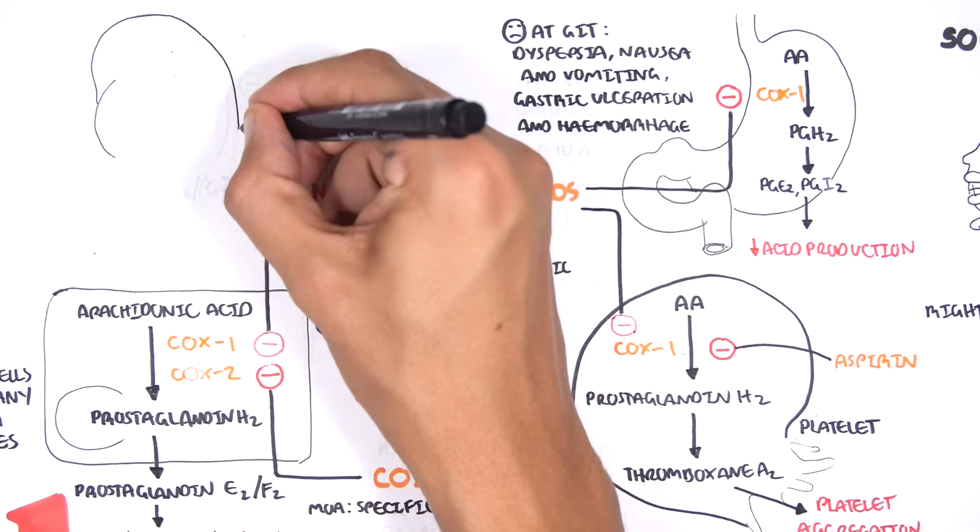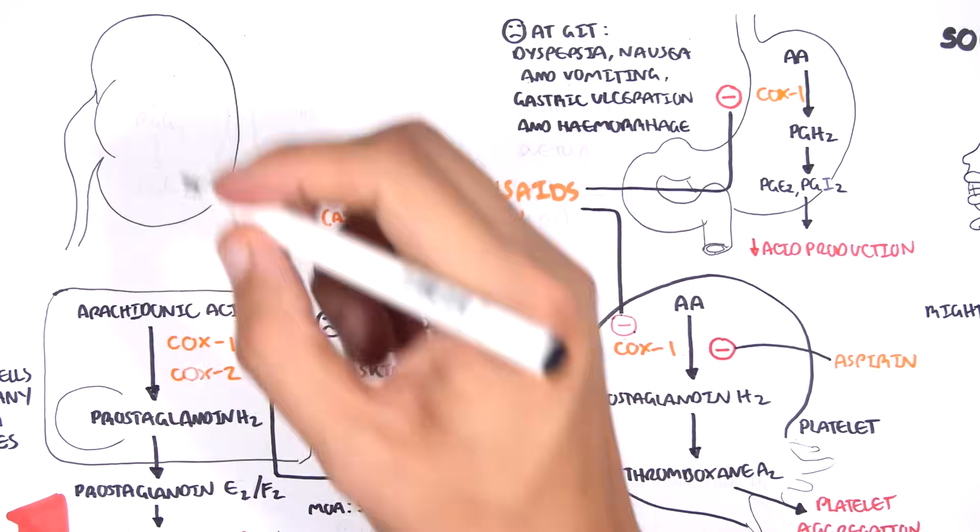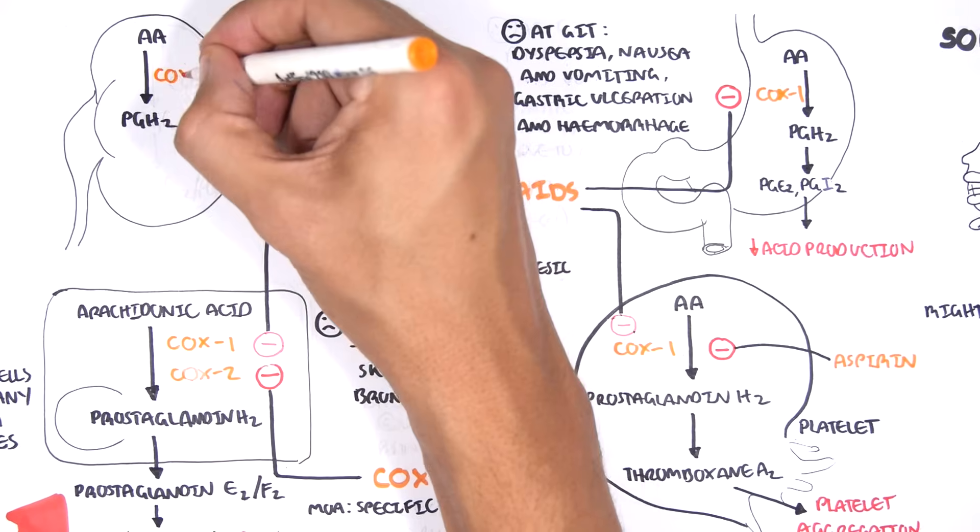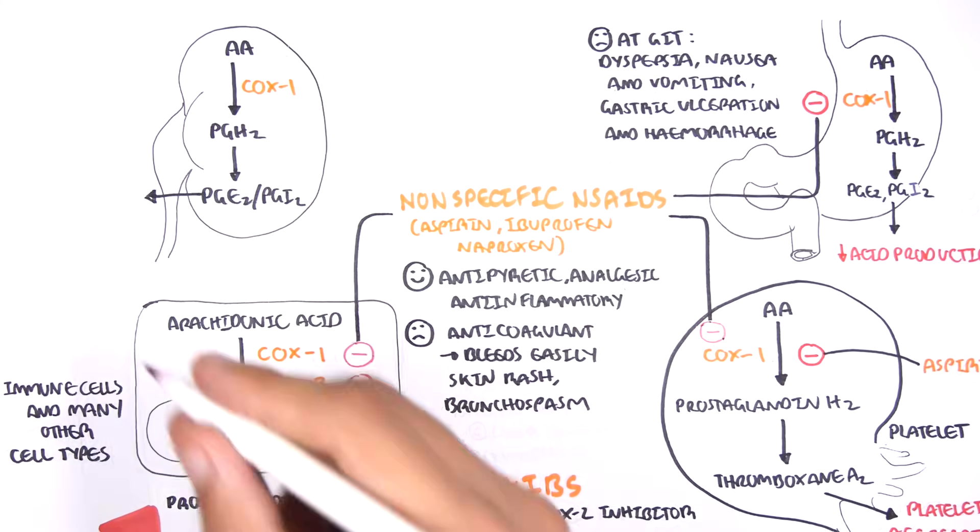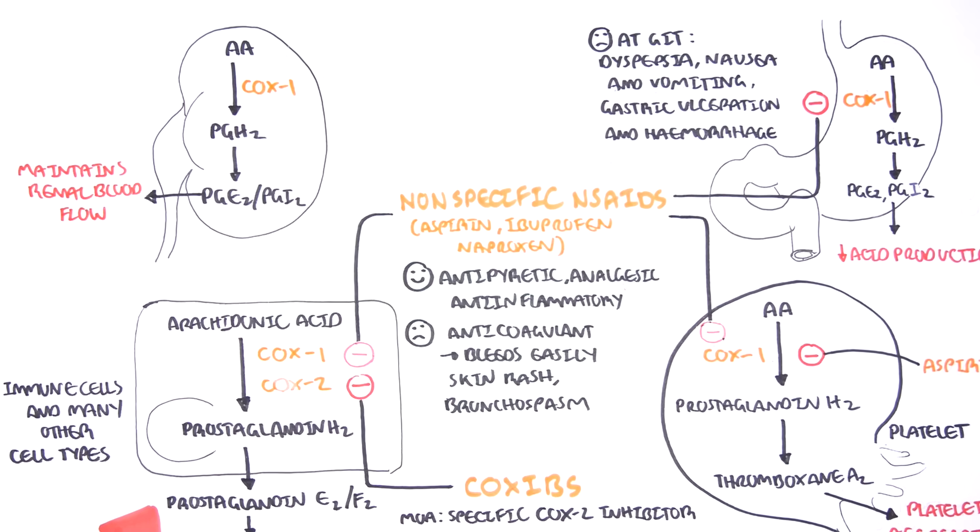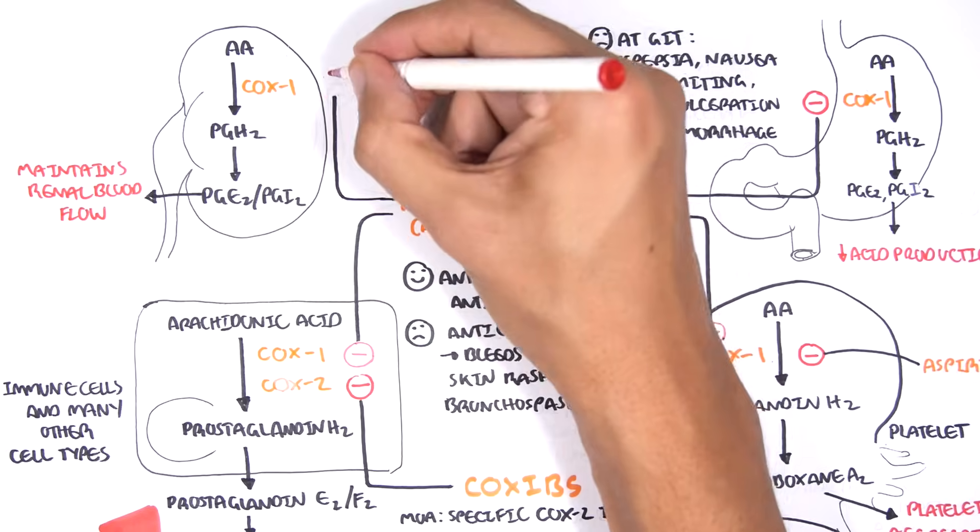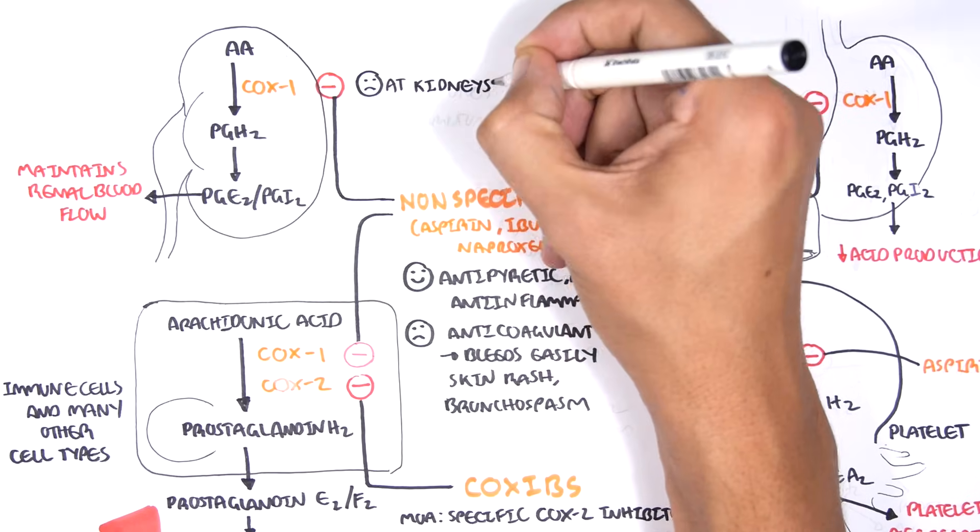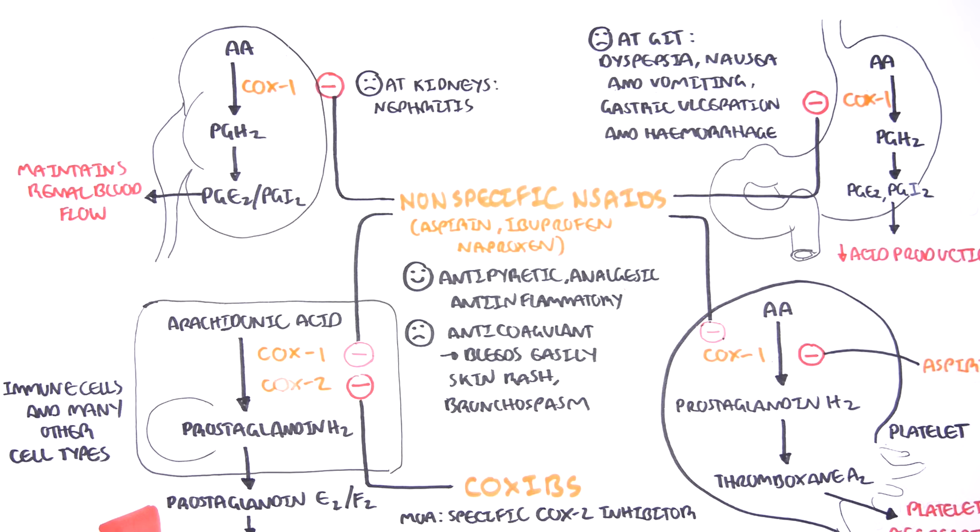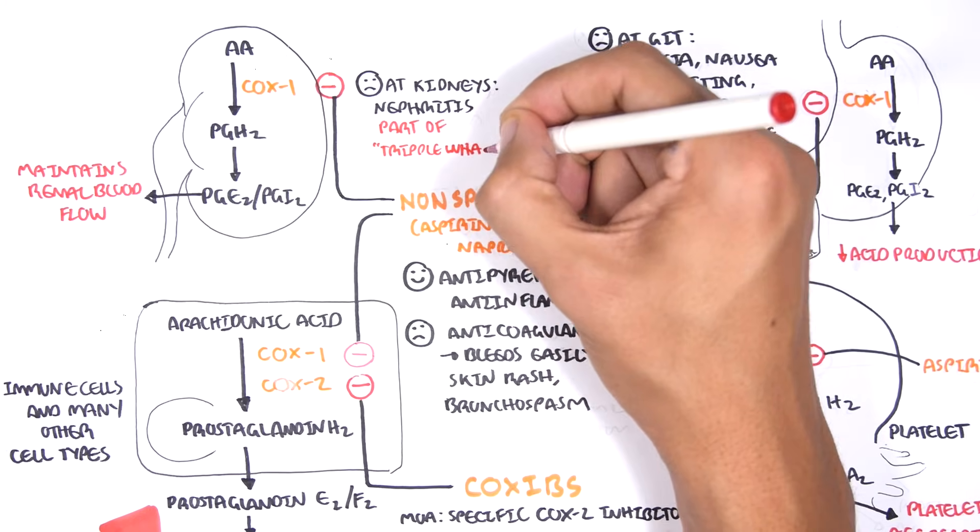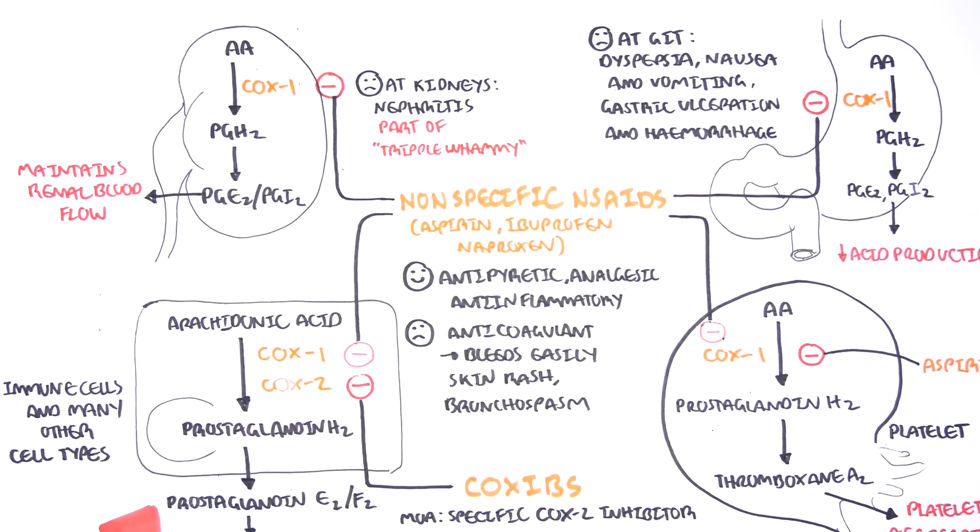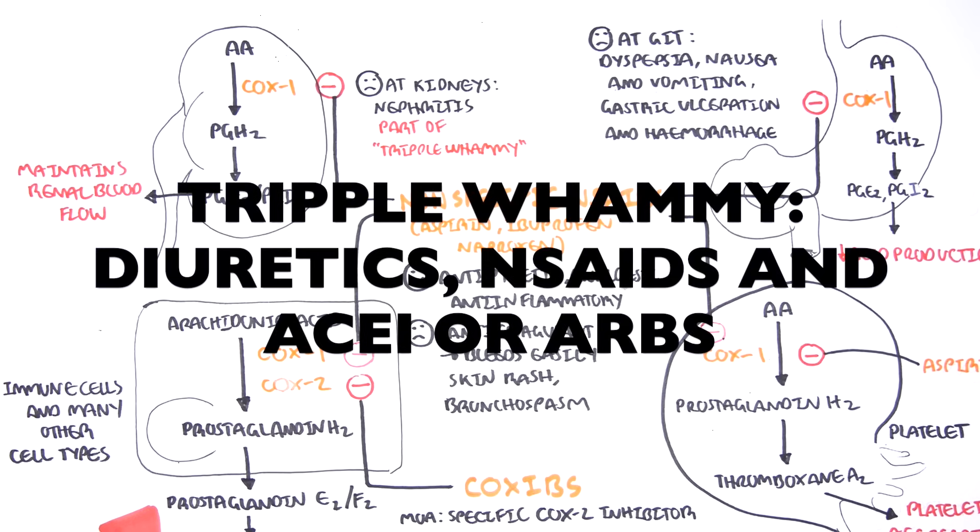In the kidney, COX1 normally converts arachidonic acid to prostaglandin H2, which then makes prostaglandin E2 and prostaglandin I2. In the kidney, these prostaglandins help maintain renal blood flow. Therefore, NSAIDs can actually cause nephritis and kidney injury. NSAIDs are also one of three drugs which make up what's called the triple whammy. Triple whammy is a combination of three drugs you do not want to be on, especially if you have some kidney problem. These three drugs are diuretics, NSAIDs, and ACE inhibitors or angiotensin receptor blockers.